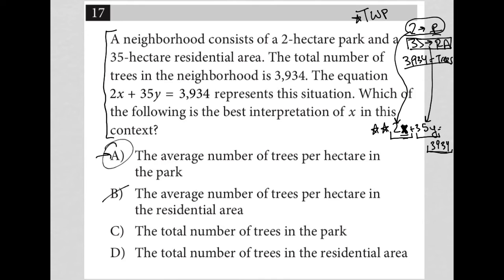Hmm, okay. So choice A is the average number of trees, and choice C is the total. I actually think A is better than C because we're only asking about x. And this equation wouldn't make sense if x represented the total number of trees.